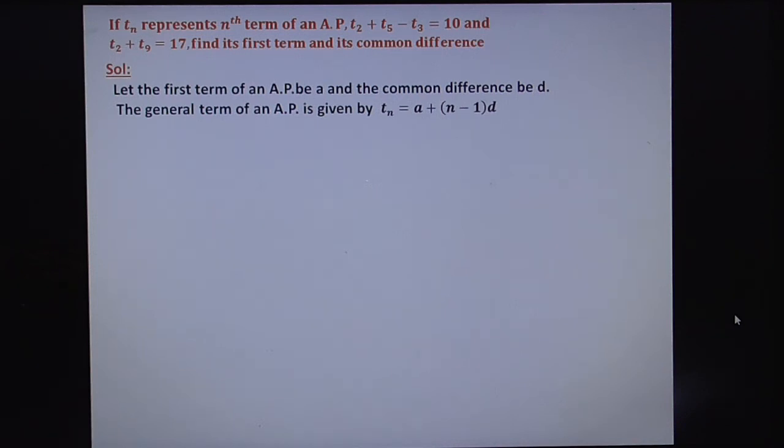For T2, in place of N, write n equals 2, you get A plus D. For T5, substitute n equals 5, you get A plus 4D. In place of N, substitute 3, you get A plus 2D. So by using this formula, apply this formula for the first condition.